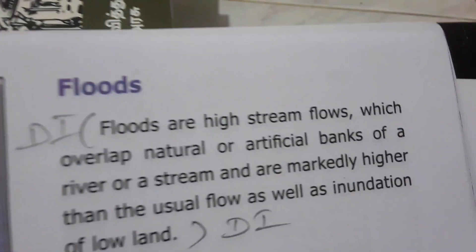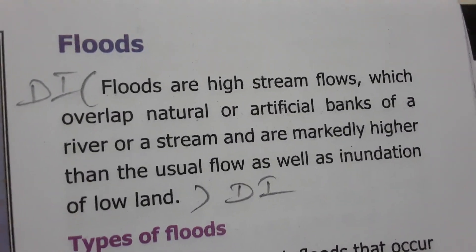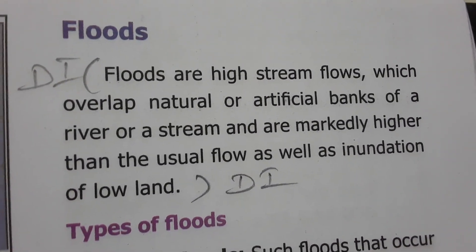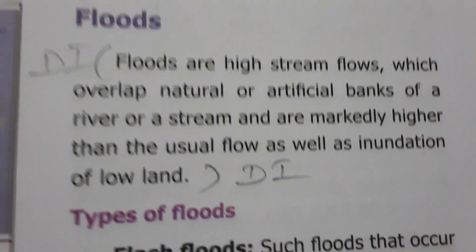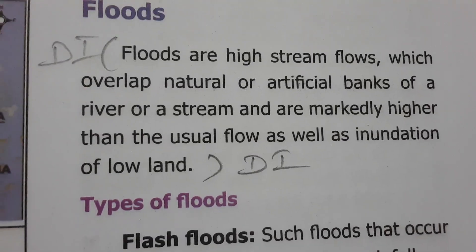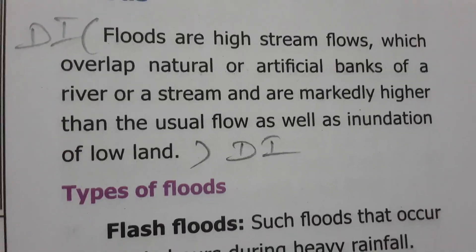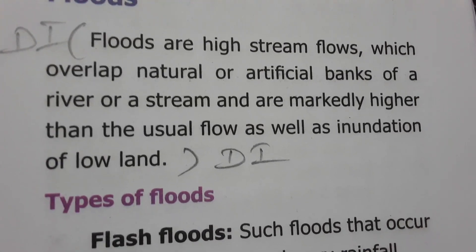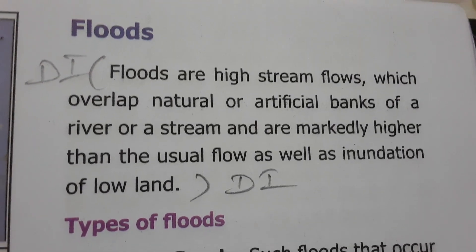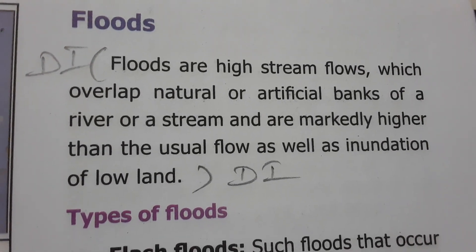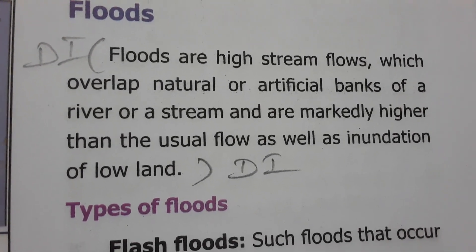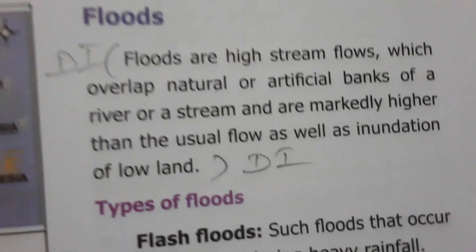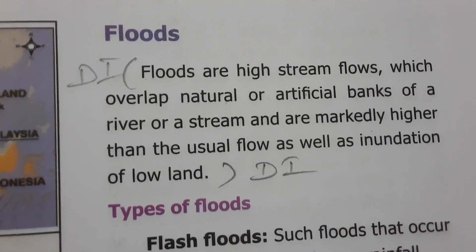Floods are high stream flows which overlap the natural and artificial banks of a river or stream, and are markedly higher than the usual flow, as well as inundation of low land. This is the flood definition from the book.